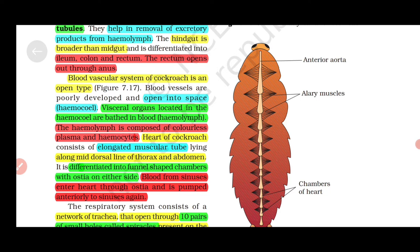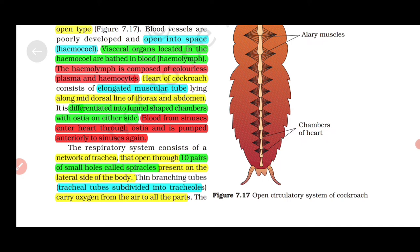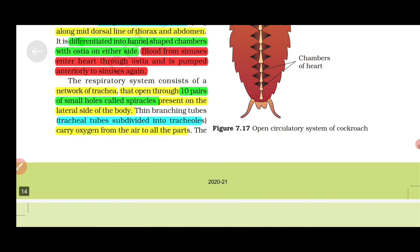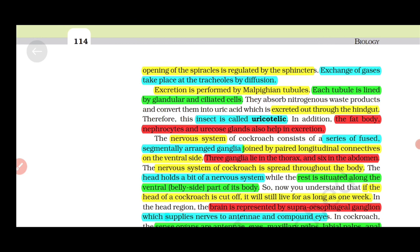The blood vascular system of cockroach is an open type that opens into spaces called hemocoel. Visceral organs located in the hemocoel are bathed in blood, called hemolymph. The hemolymph is composed of colorless plasma and hemocytes. The heart of cockroach is an elongated muscular tube along the mid-dorsal line of thorax and abdomen, differentiated into funnel-shaped chambers with ostia on either side. Blood from sinuses enters the heart through ostia and is pumped anteriorly to sinuses again. The respiratory system consists of a network of tracheae that open through 10 pairs of small holes called spiracles. Tracheal tubes subdivide into tracheoles that carry oxygen from the air to all parts. Opening of spiracles is regulated by sphincters. Exchange of gases takes place at the tracheoles by diffusion.